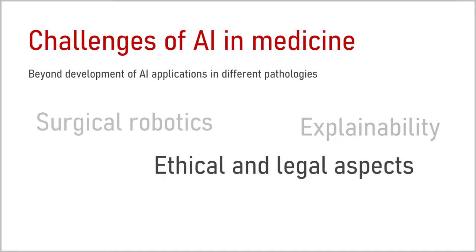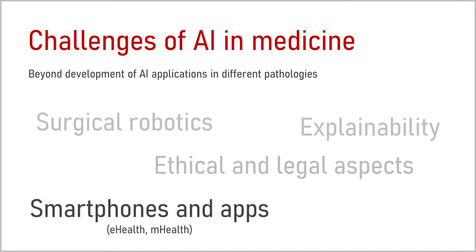We can also mention ethical and legal aspects that should be integrated in machine learning models to avoid, for example, possible bias or discrimination and to protect patients' data privacy. An important domain of artificial intelligence covers smartphone and mobile phone applications for medicine, known as e-health for electronic health or m-health for mobile health. This innovation includes smartphone apps to aid diagnosis such as skin lesion classification or other types of mobile systems.